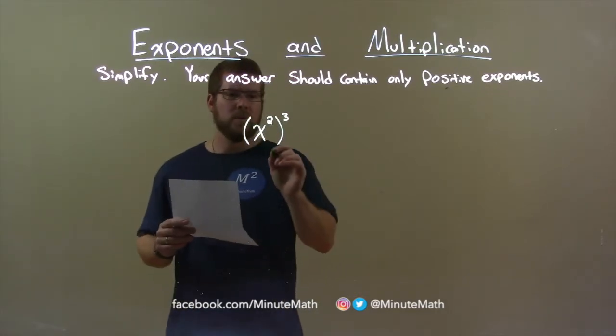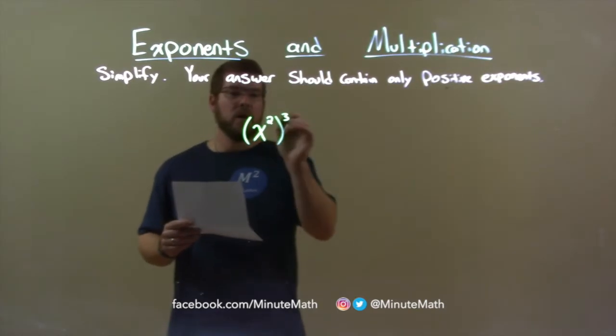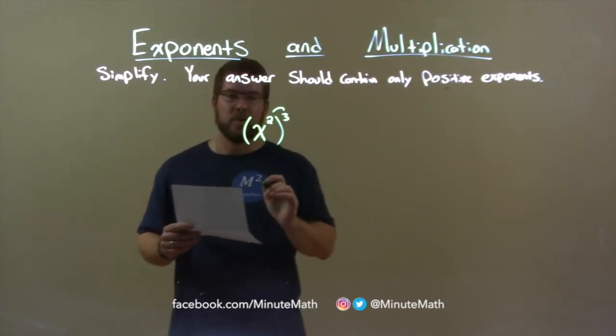Well, one thing we do here, when we have a variable to the exponent, all that to another exponent, we multiply these exponents.